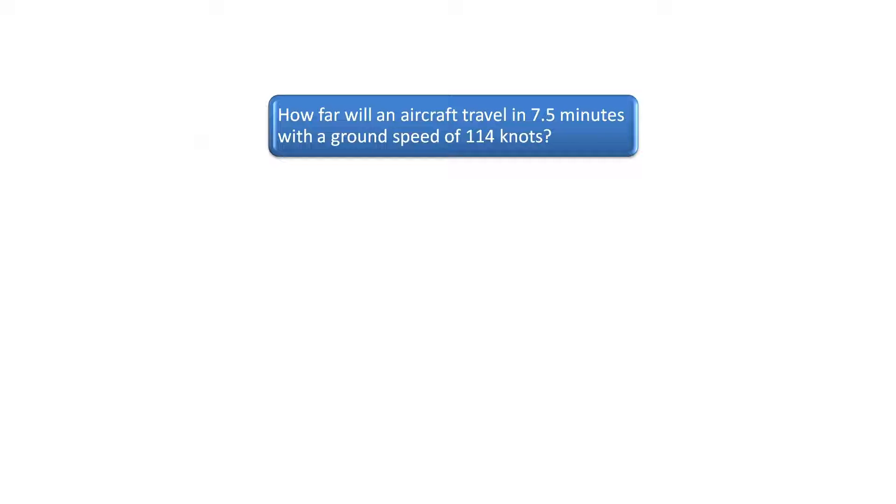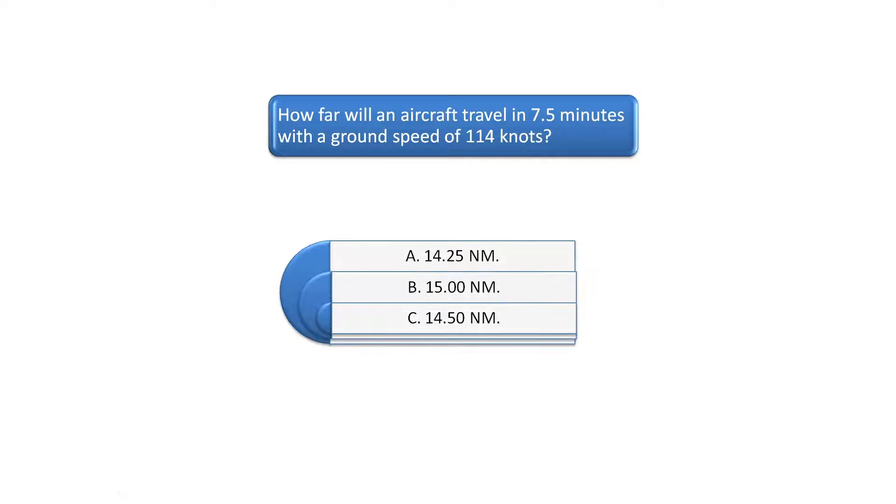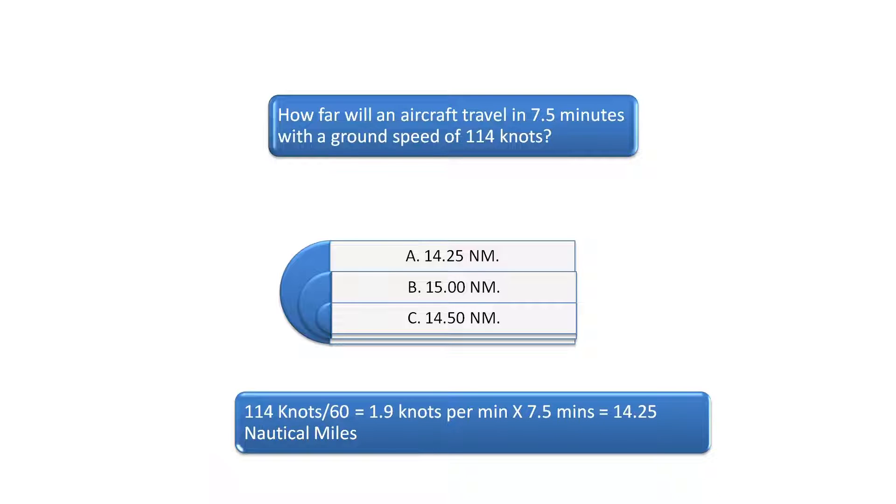The first question asks, how far will an aircraft travel in 7.5 minutes with a ground speed of 114 knots? To find the answer, you can use the distance flown function on an E6B calculator or do the problem by hand.